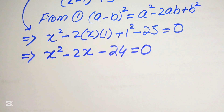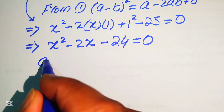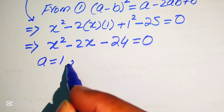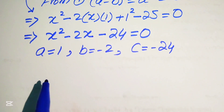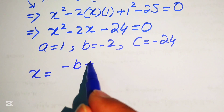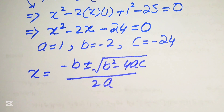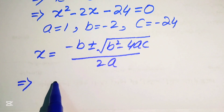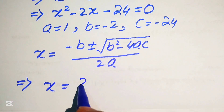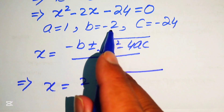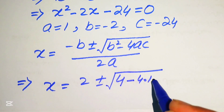This is a quadratic equation in x, so we apply the quadratic formula. The coefficients are a equals 1, b equals minus 2, and c equals minus 24. The quadratic formula is x equals minus b plus or minus square root of (b² minus 4ac) divided by 2a. Substituting: minus b gives plus 2, b² gives 4, and 4ac gives 4 times 1 times minus 24.